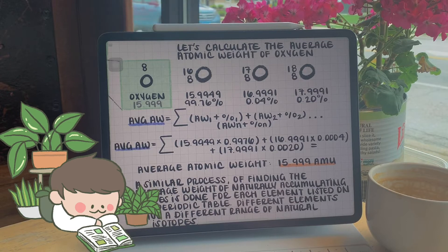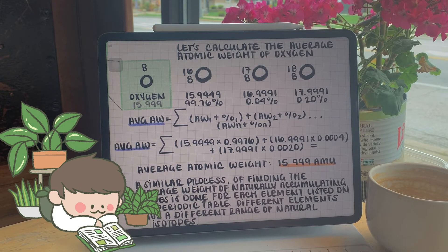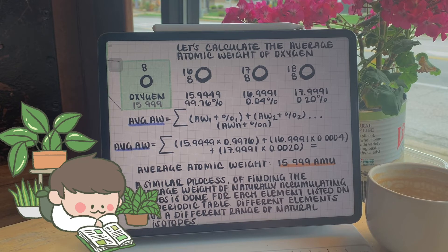So if we take an average of all these isotopes' weights, oxygen-16 is going to have the biggest impact to the overall weight of the average.